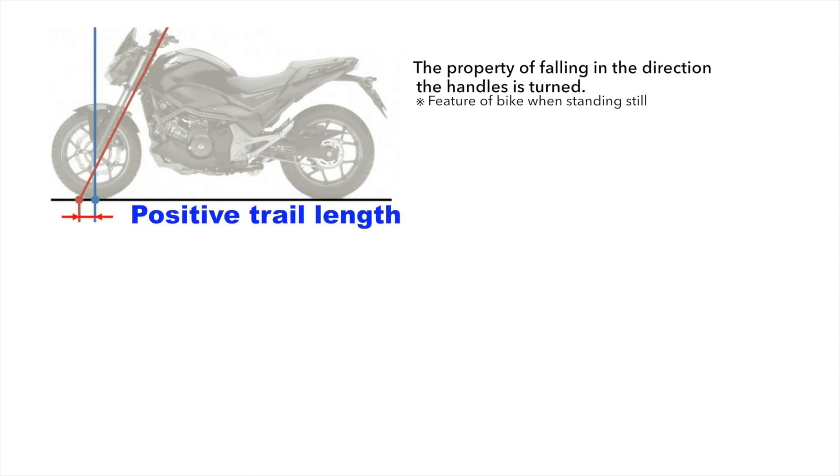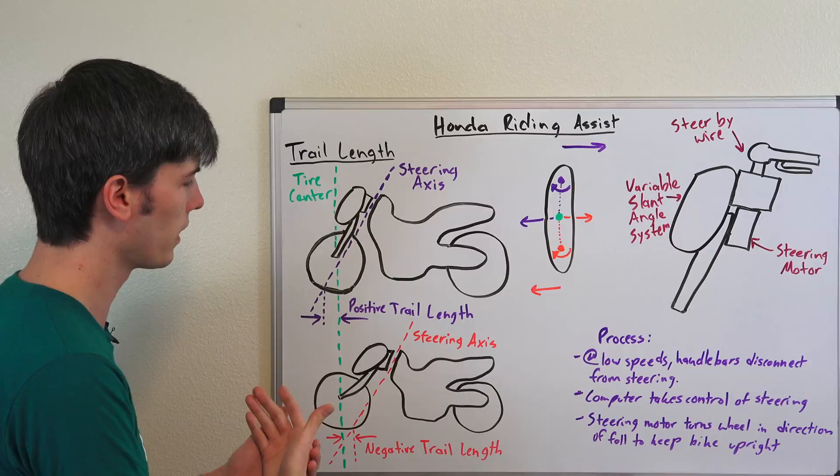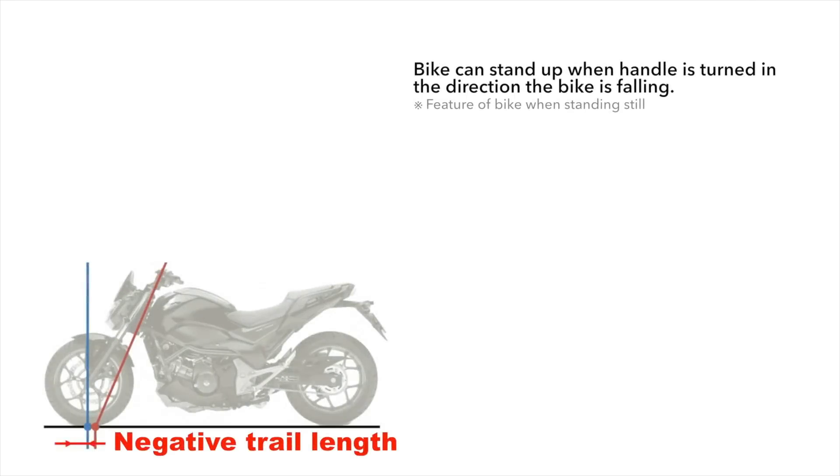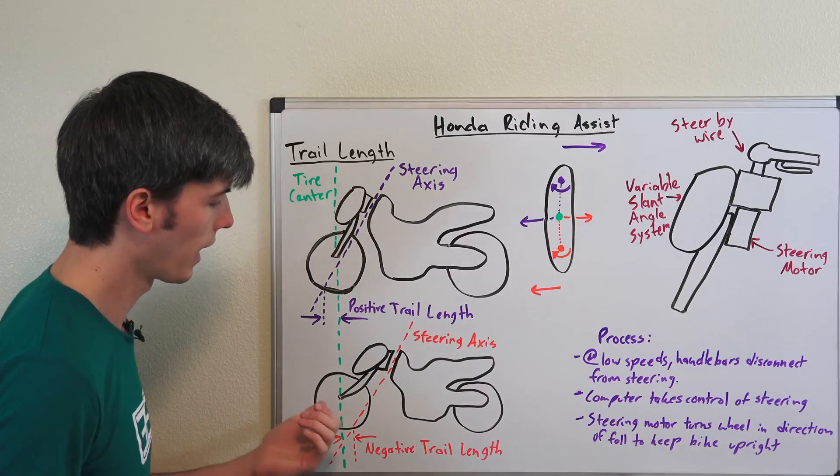Then there's something called negative trail length, where the steering axis lies behind the center of the tire. This is good for super low speeds to maintain stability.